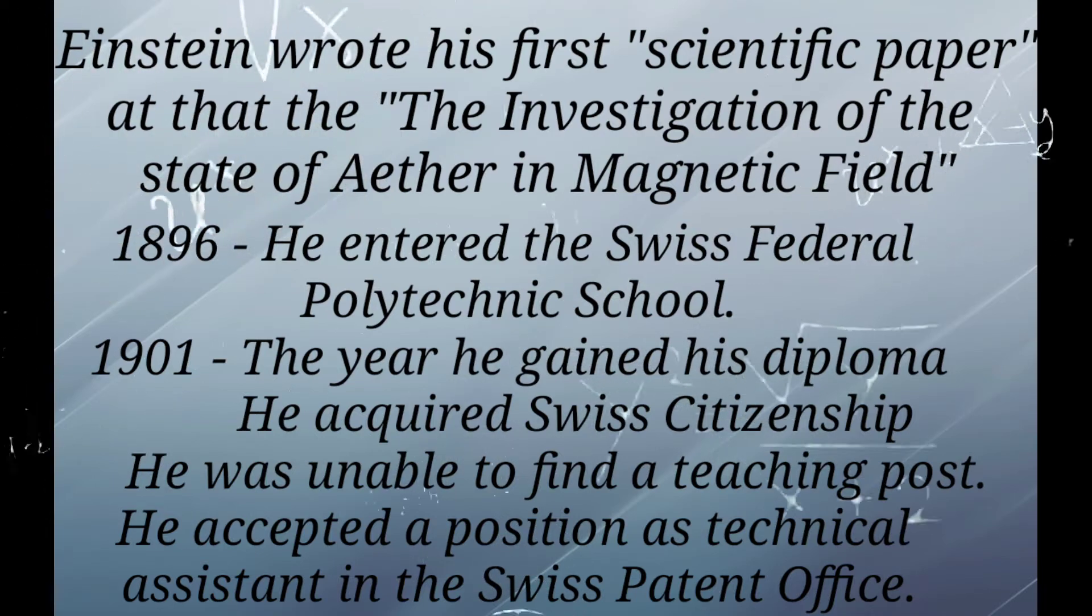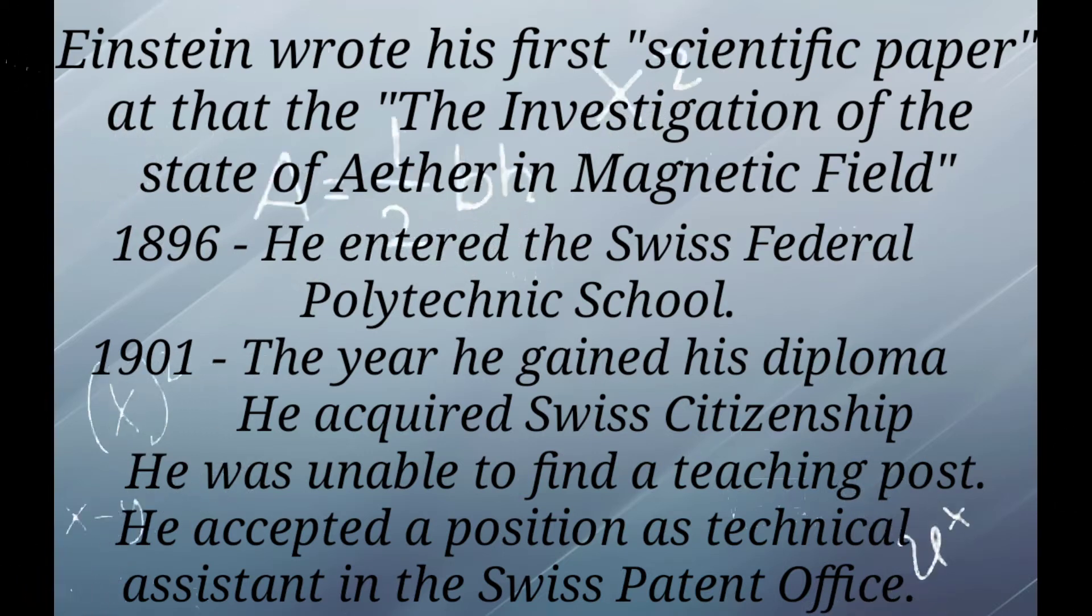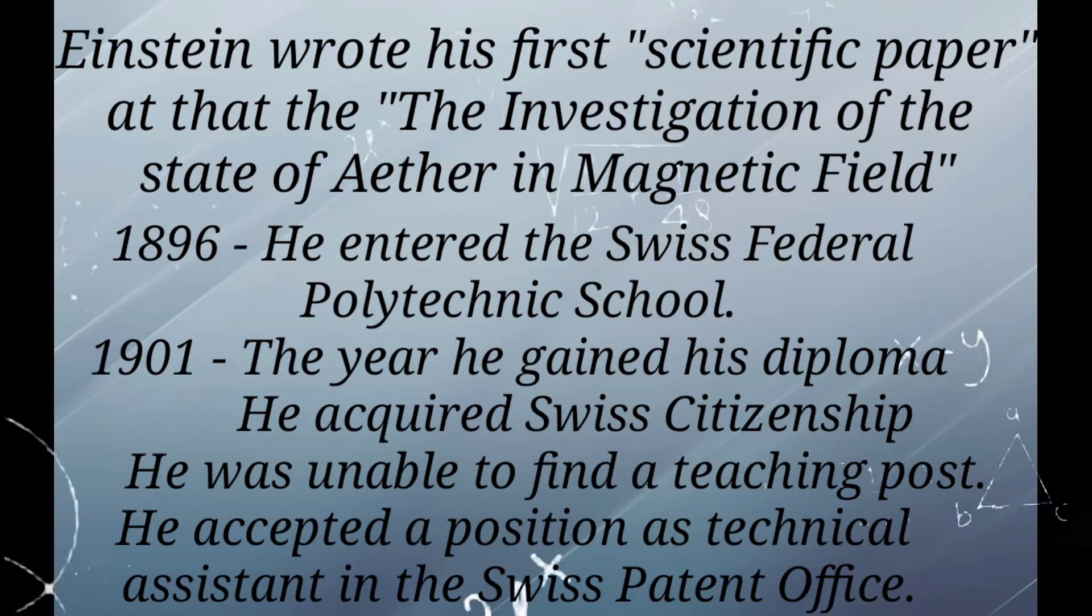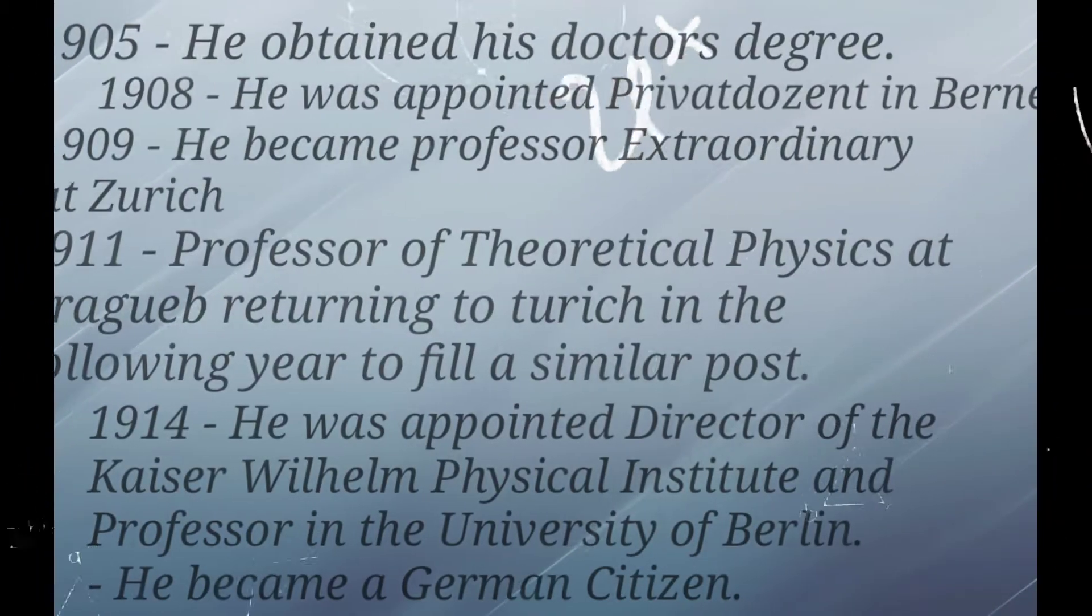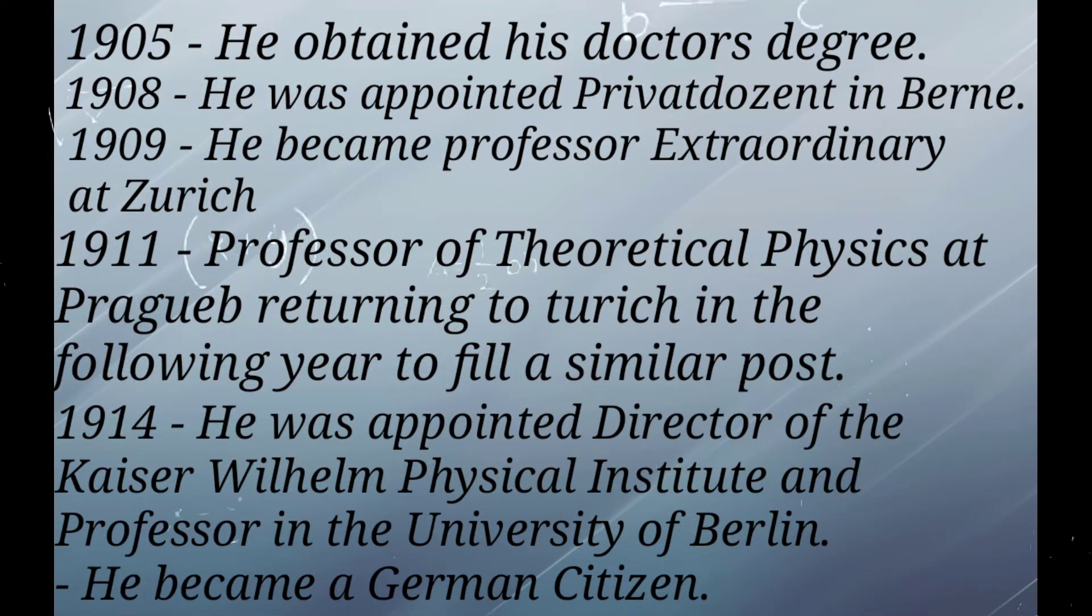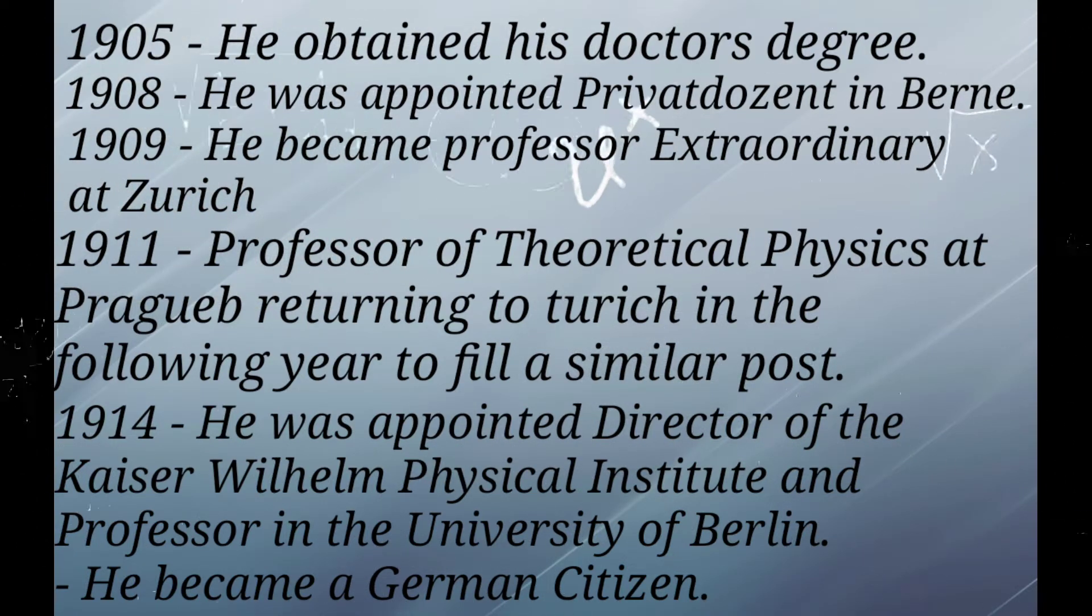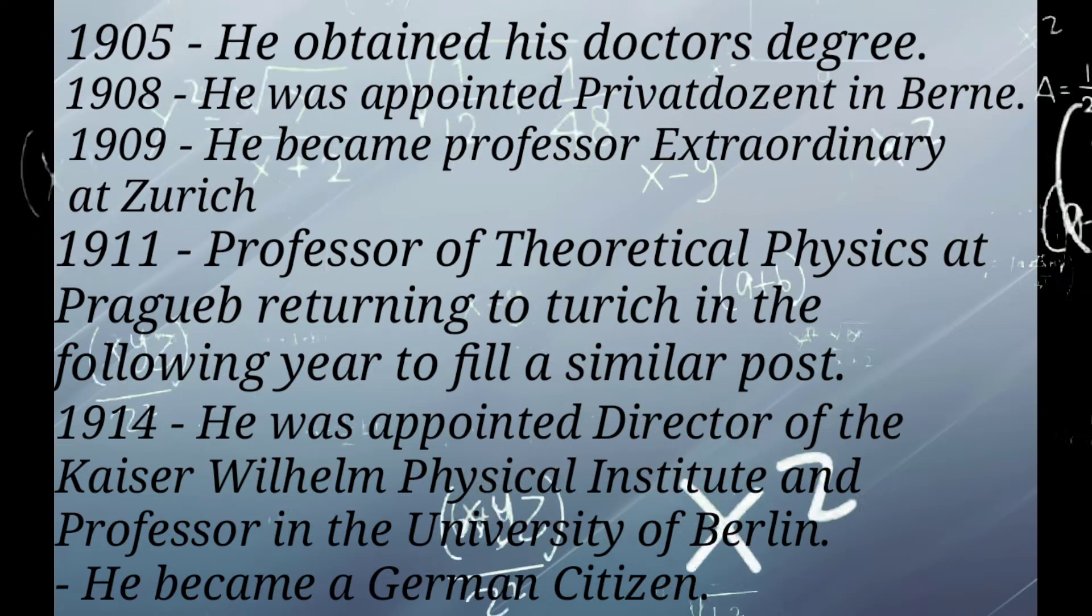The investigation of the state of ether in magnetic fields. In 1896, he entered the Swiss Federal Polytechnic School. In 1901, the year he gained his diploma, he acquired Swiss citizenship but was unable to find a teaching post. In 1905, he obtained his doctor's degree. In 1908, he was appointed Privatdozent in Bern. In 1909, he became Professor Extraordinary at Zurich. In 1911, he was Professor of Theoretical Physics at Prague, returning to Zurich the following year to fill a similar post.